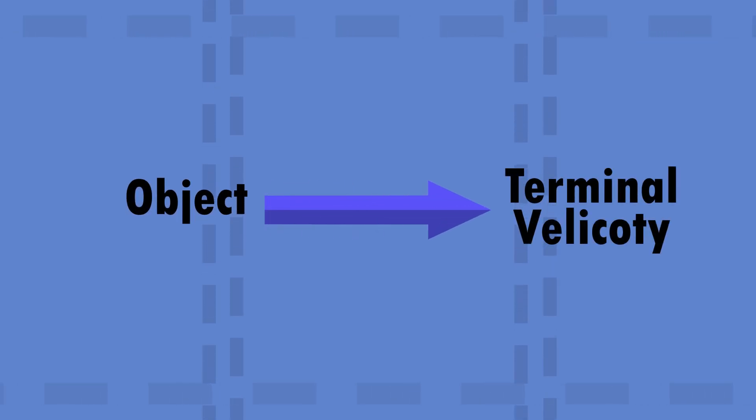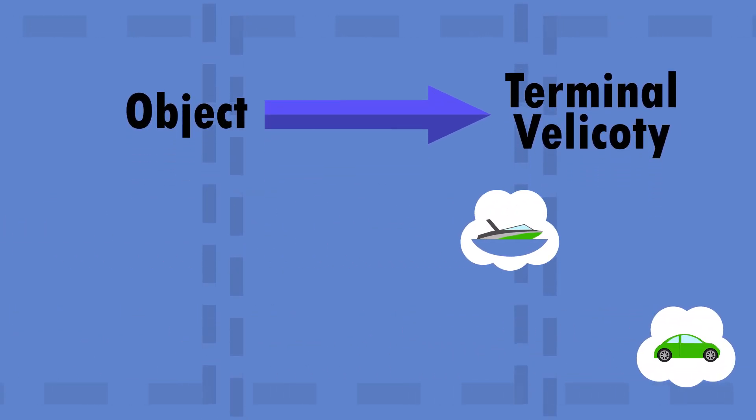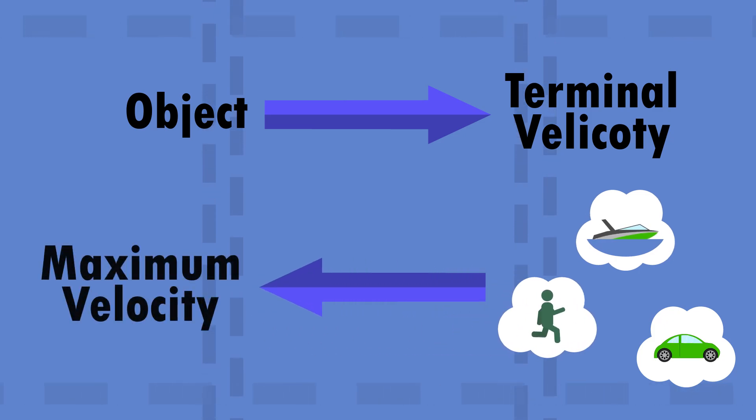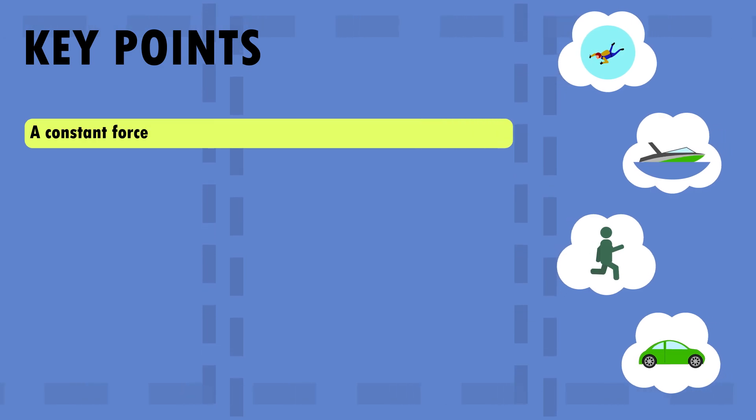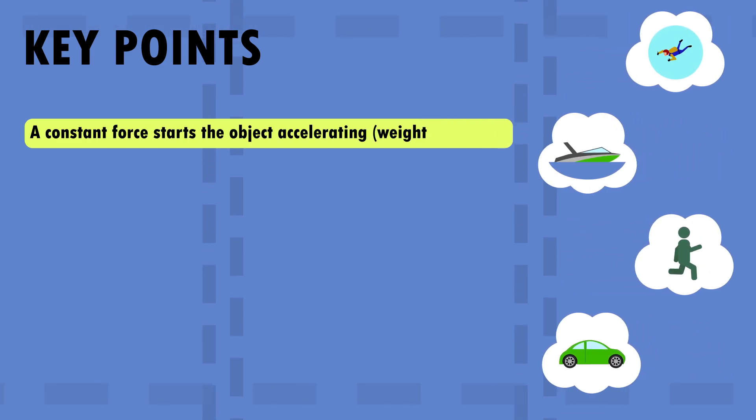The description here on how an object reaches terminal velocity and how a car or a boat or a runner reaches a maximum velocity are the same. We start with a constant force accelerating the object, either the weight or the thrust.